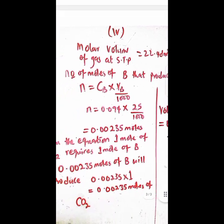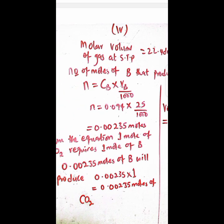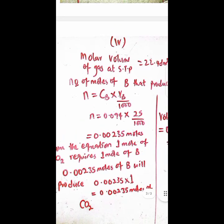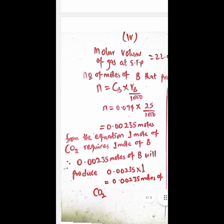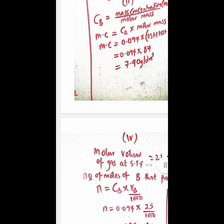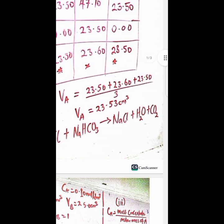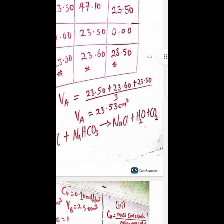So then thereafter this is the number of moles of CB that is used in that reaction. So now from the equation you know one mole of CO2 requires one mole of B. Let's go back to the equation to check that. So one mole of B here produces one mole of CO2. Yes.